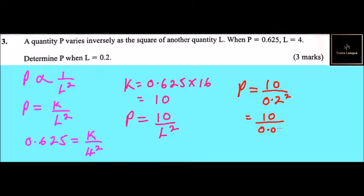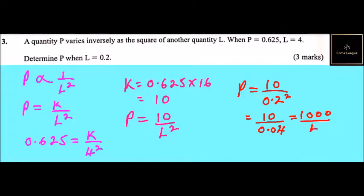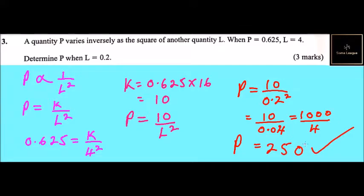That will be 10 divided by 0.04. You multiply by 100 to get 1000 divided by 4, and that will give you p equals to 250. So that is how you work out that. Remember, this is from the topic of variation — this is inverse variation, which you covered in form 3.